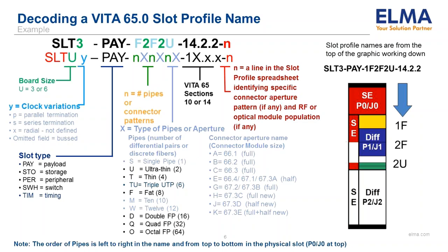Following the SLT type is a long section of letter and number combinations that indicate the type of pipes or apertures and the number of each. As SLT profiles have become more fully defined, this section of the SLT profile name can become quite long and unwieldy. Another unfortunate aspect of this portion of the naming convention is that two different SLT profiles may have the same type and number of pipes but still be different because the sections, though in the same order, are located on different wafers. Apertures are a very important new addition to the SLT profile name and will be the subject of another tutorial.